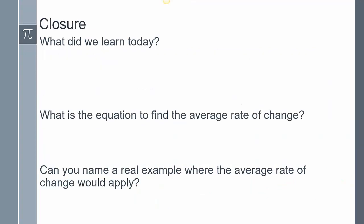To close today's lesson, what did we learn? We talked about how to graph a linear equation, we examined the average rate of change, we talked about how that relates to the difference quotient. Remember that even though a simplified function could represent a line, we still have to consider the domain when we go through and graph it. I want to hear from you: What is the equation to find the average rate of change? And can you name a real example where the average rate of change would apply? This concludes our lesson.